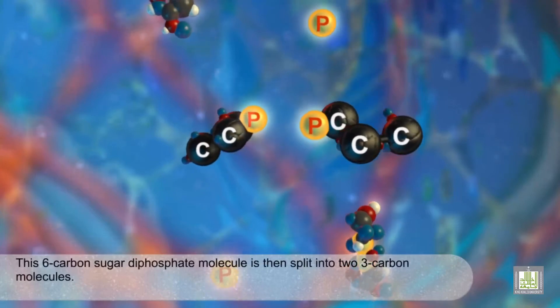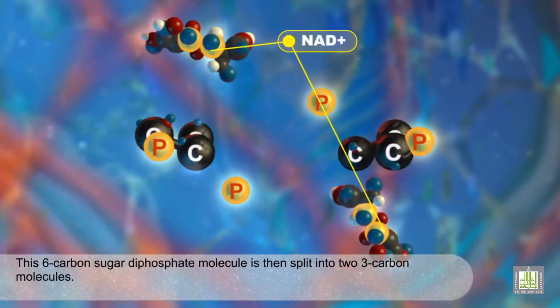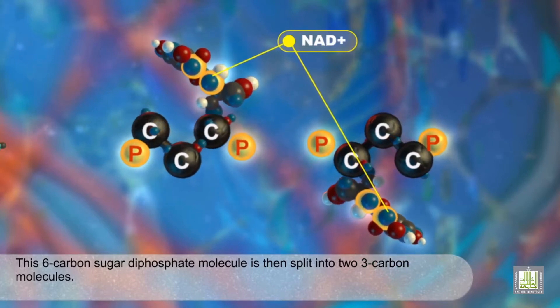This six-carbon sugar diphosphate molecule is then split into two three-carbon molecules.